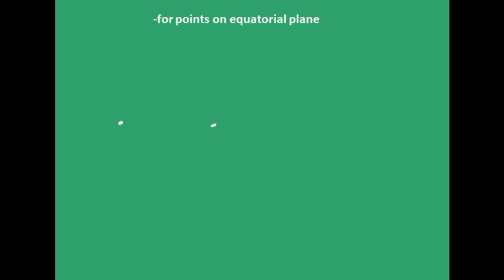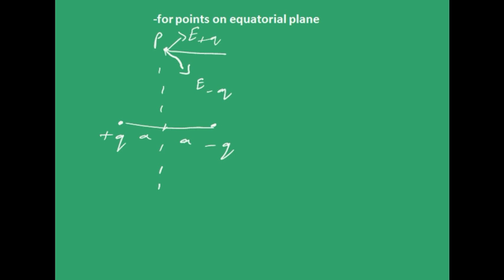For a point on the equatorial plane: if one charge is positive and the other is negative, separated by distance 2a, the dashed line passing through the center of the dipole is not just a line but a plane — the equatorial plane. For a point P on this plane, the electric field due to the positive charge points in one direction and due to the negative charge in another direction. The vertical components cancel, and the net electric field is in the horizontal direction only, which is opposite to the direction of the dipole.